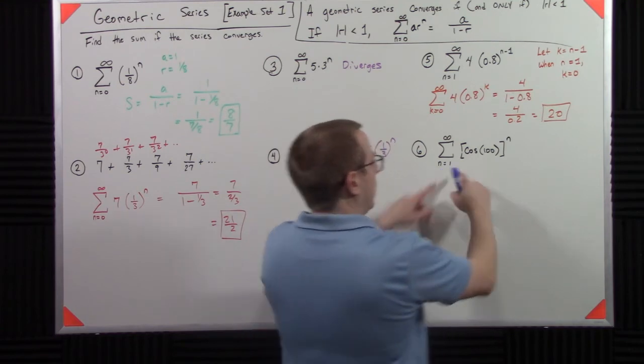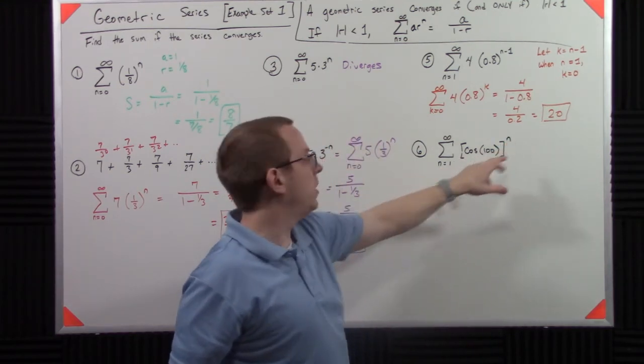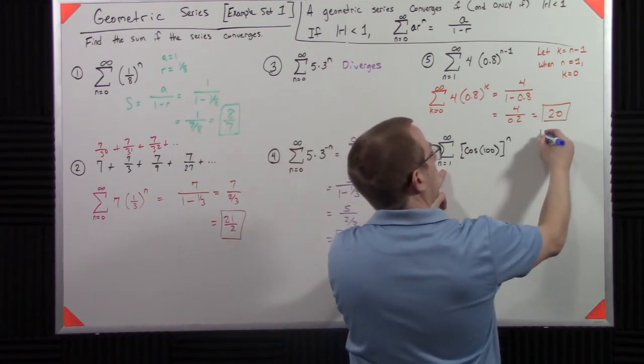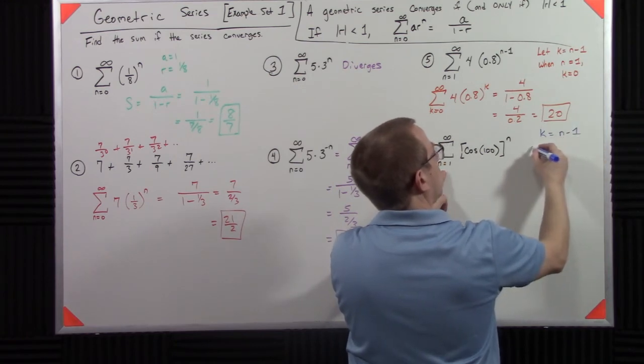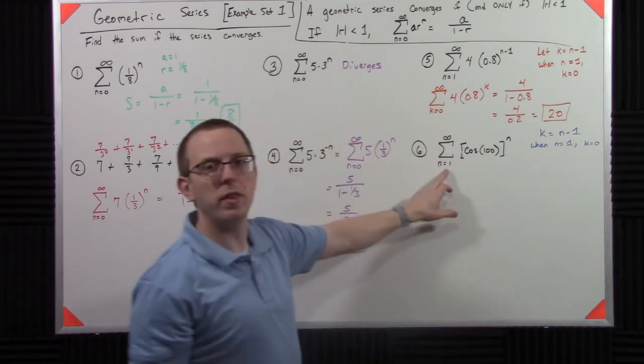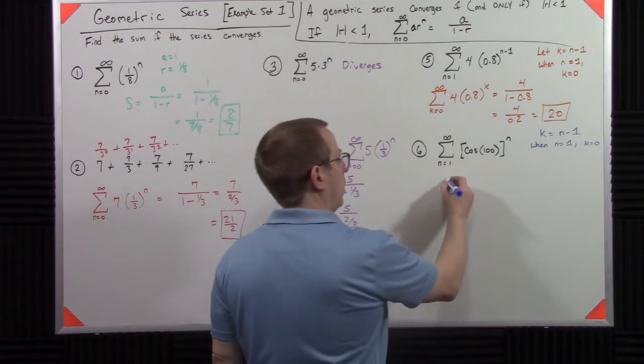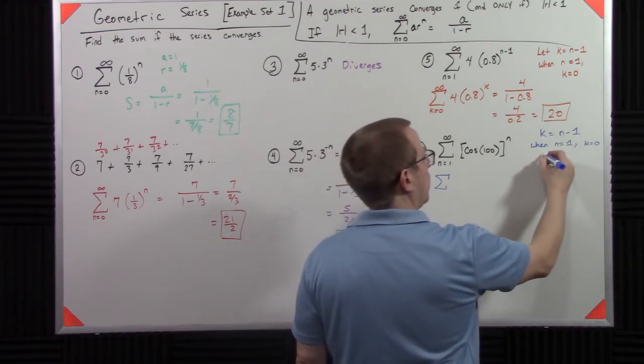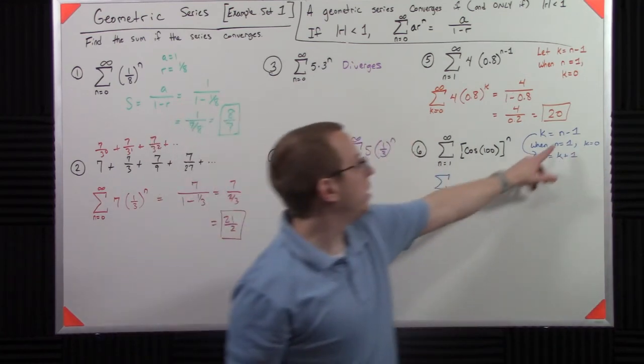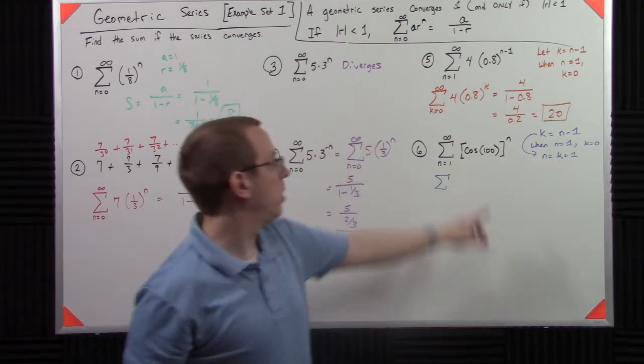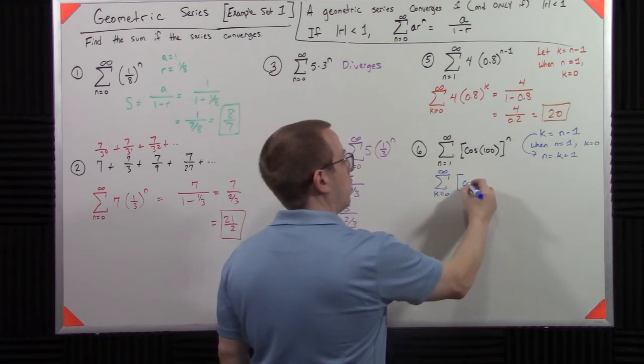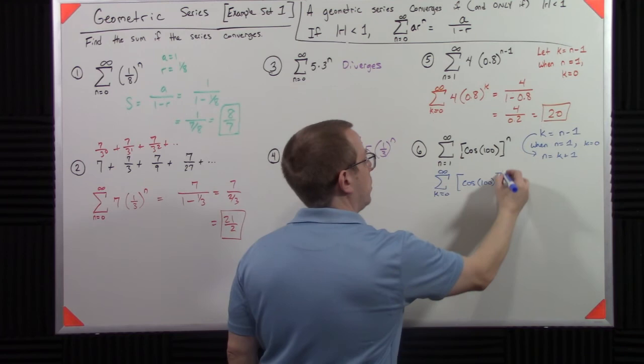But I need to do this re-indexing. So I'm going to say, when we do re-indexing, we don't really worry about this piece. We're really trying to get this to equal 0. So I say, k equals n minus 1. I want these indices to match. So I'm going to rewrite this. If I add 1 to both sides, n is equal to k plus 1. So we're going to use that here. So now we have k equals 0 to infinity cosine of 100 to the k plus 1.